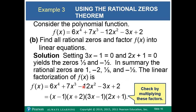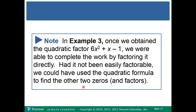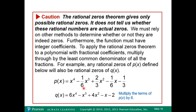Note: once we obtained the quadratic factor, we were able to complete the work by factoring it directly. Had it not been easily factorable, we could have used the quadratic formula to find the other two zeros. Also, the Rational Zeros Theorem gives only possible rational zeros — it does not tell us whether these are actual zeros; we must rely on other methods like the Factor Theorem and Remainder Theorem. Furthermore, the function must have integer coefficients. To apply the Rational Zeros Theorem to a polynomial with fractional coefficients, multiply through by the least common denominator so all coefficients become integers.